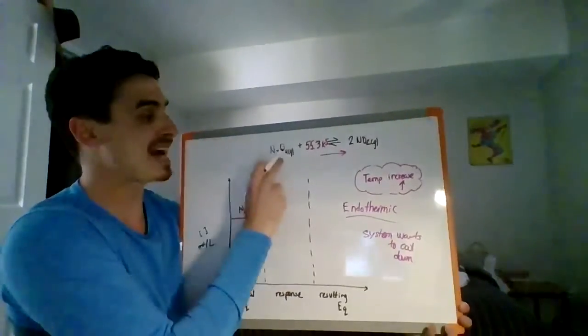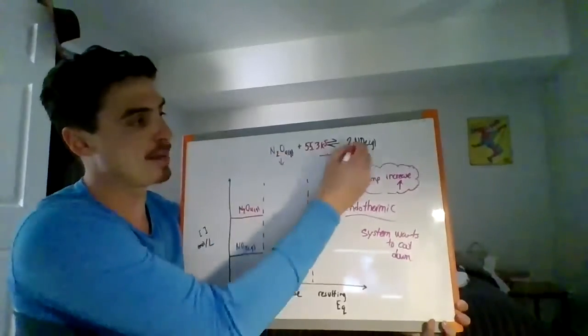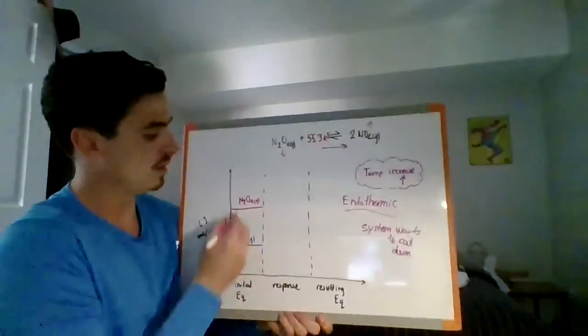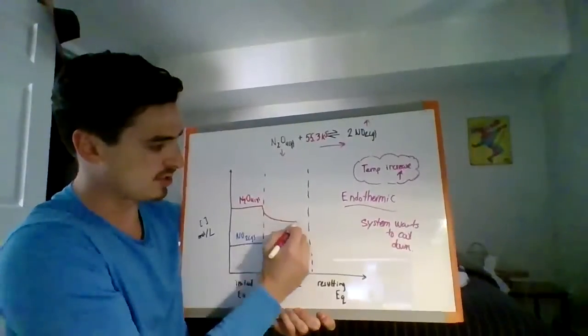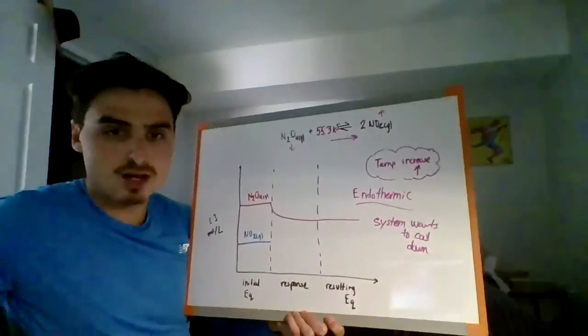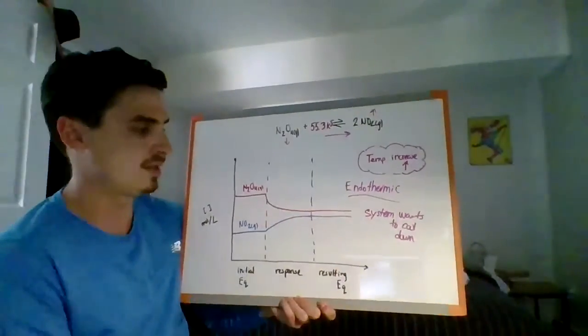And I'm going to be producing more of this, which means this is going to go up. So N2O4 is going to go down. And N2O2 is going to go up.